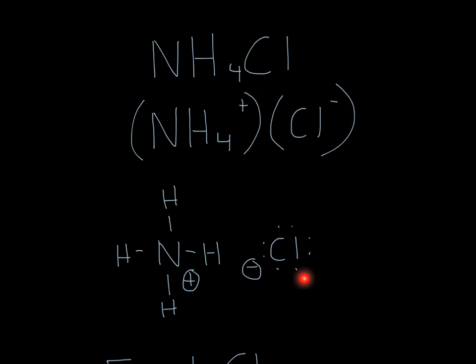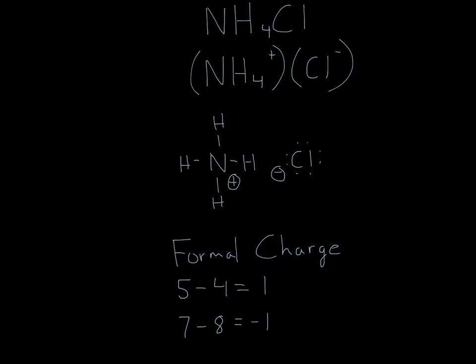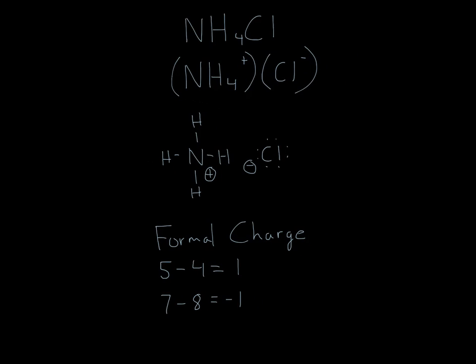So let's see why this has a positive charge and this has a negative charge. When we calculate formal charge for nitrogen, nitrogen is a group 5 element. That means we'll put a 5 there and then count the bonds. So 1, 2, 3, 4. So 5 minus 4 is 1, right? And that's why it has a plus charge.